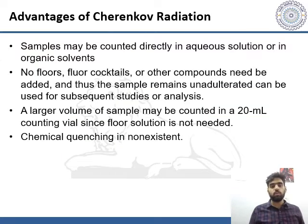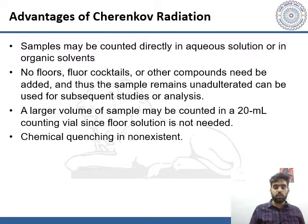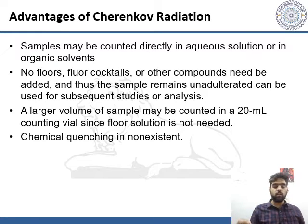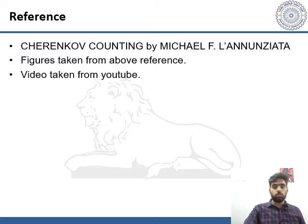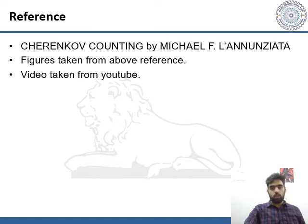Cherenkov radiation samples may be counted directly in an aqueous solution or organic solvent. No fluor cocktail or other component needs to be added, and thus the sample remains unadulterated and can be used for subsequent studies or analysis. A larger volume of sample may be counted in a 20-milliliter counting vial. Since fluor solution is not needed, chemical quenching is non-existent. The reference for this is Cherenkov counting by Michael F. L'Annunziata, and the video is taken from YouTube. Thank you.